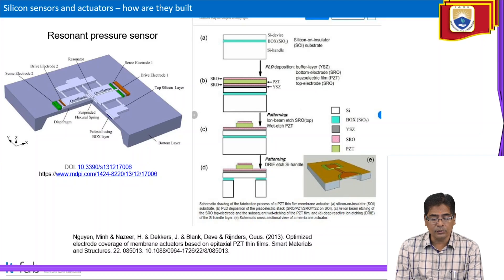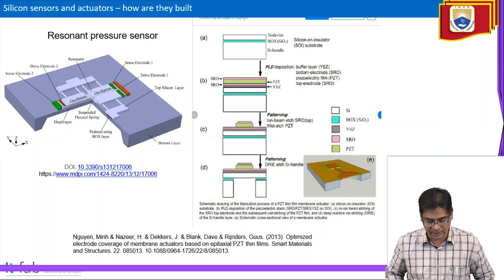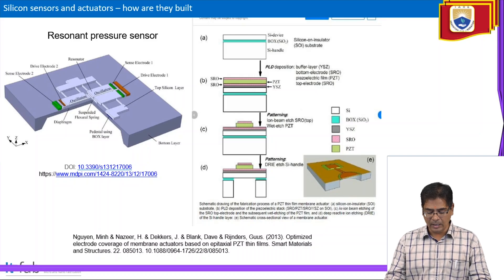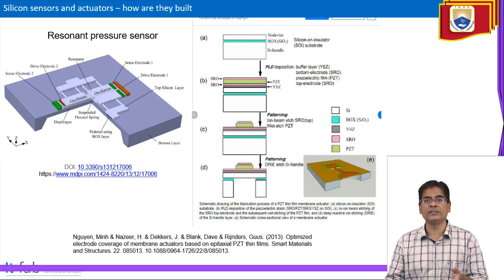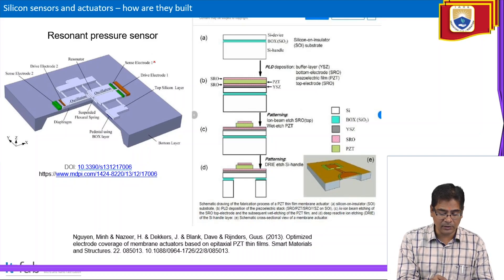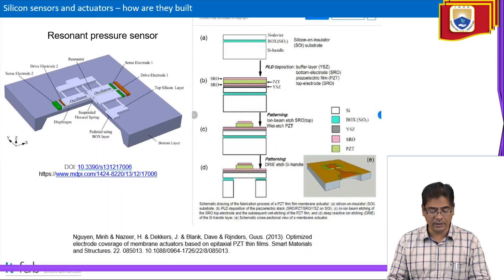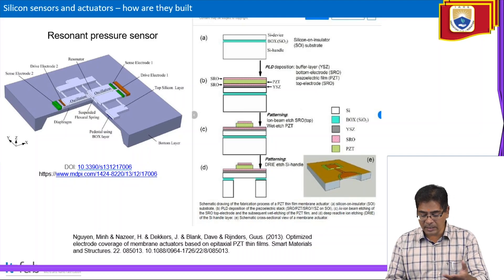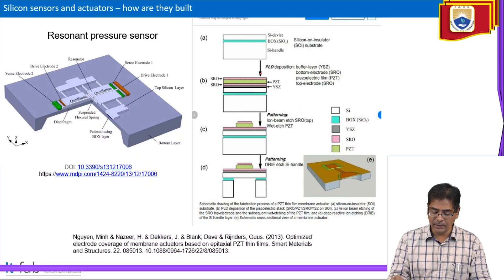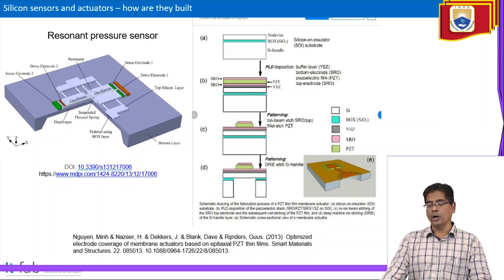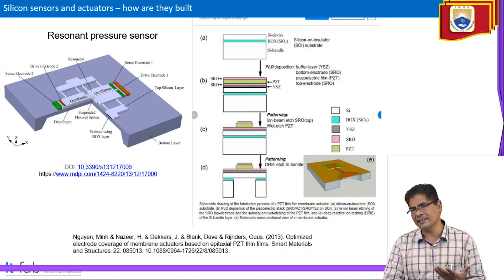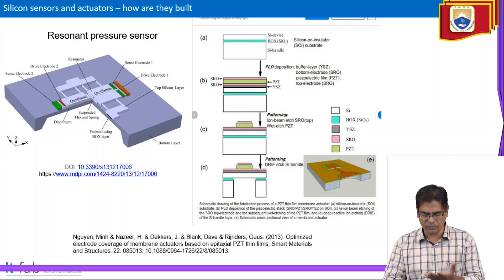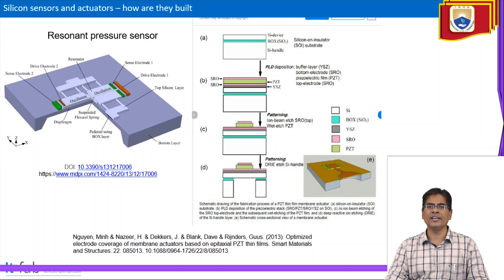Silicon sensors and actuators — for example a resonant pressure sensor — are fabricated as described in publications in Sensors and Actuators (2013). Such devices have sensing electrodes and oscillators. Patterning can be done on a silicon chip or any substrate, whether silicon, glass, or aluminum.